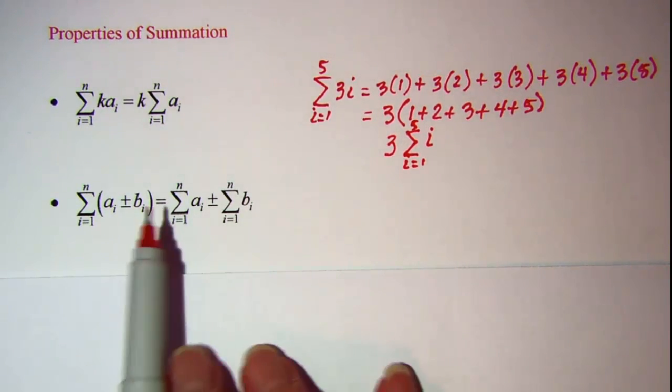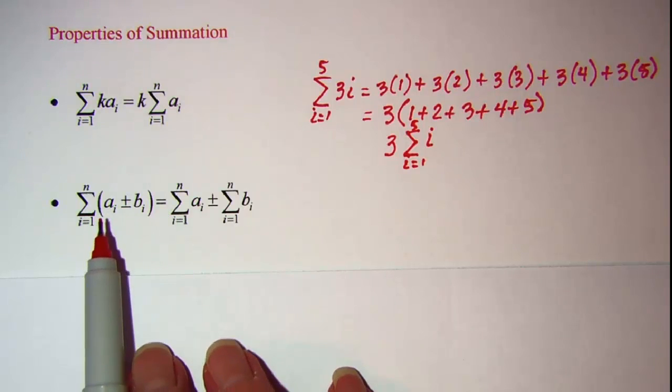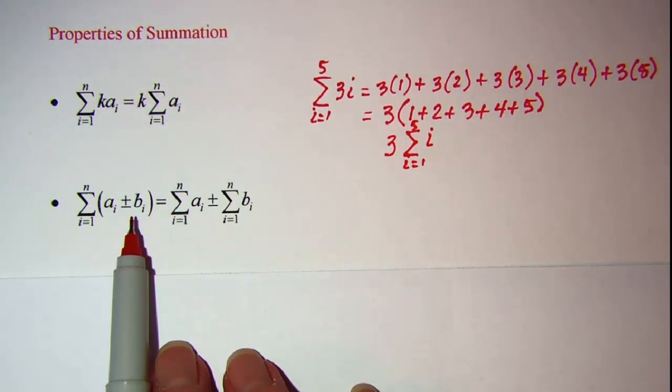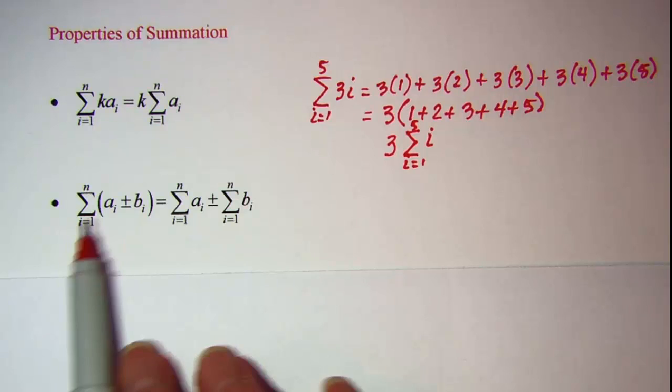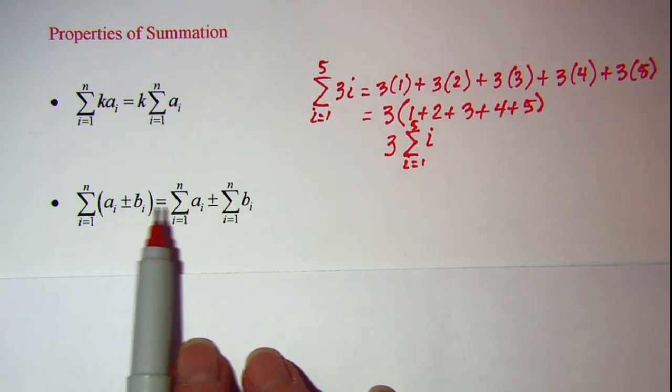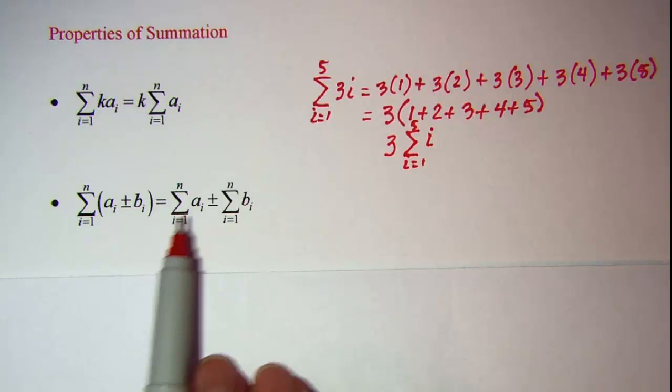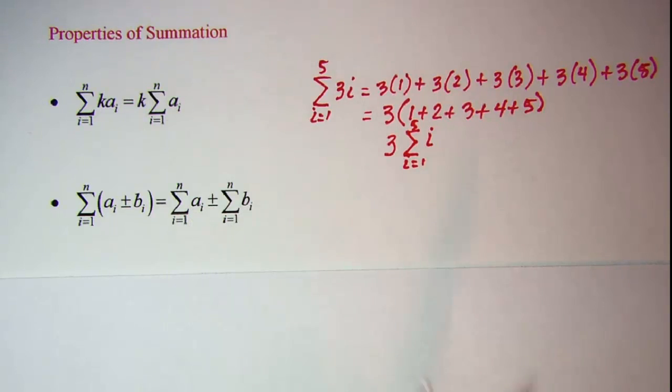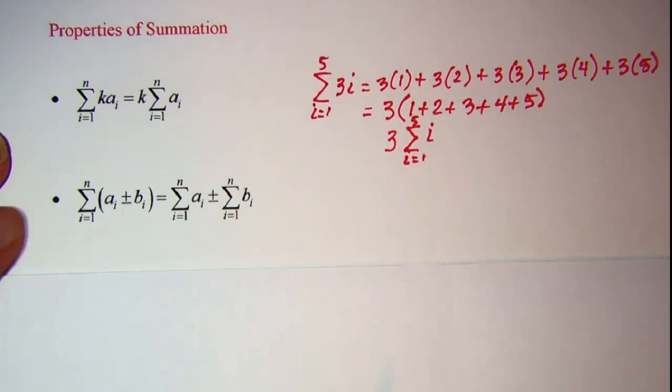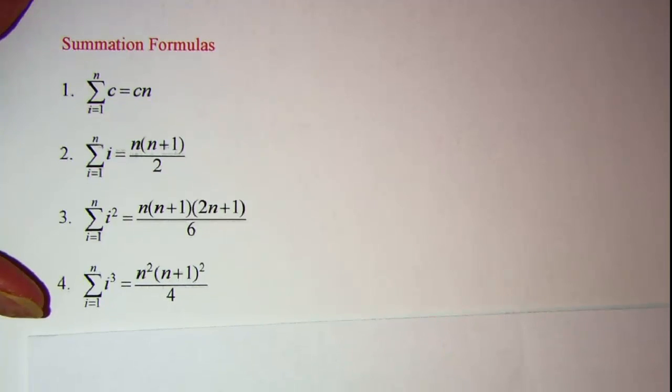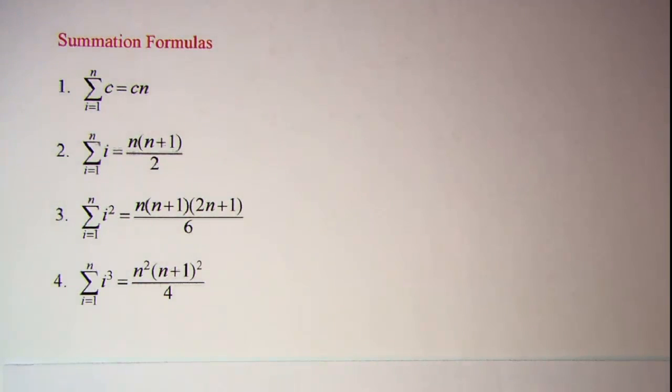This second property just says that if we have a polynomial and we want a summation of that polynomial, we can split it up into the summation of each of its terms. Now the formulas for summation, again press pause to copy these in your notes. When you're ready to continue press play.